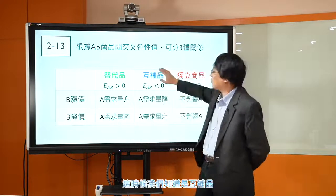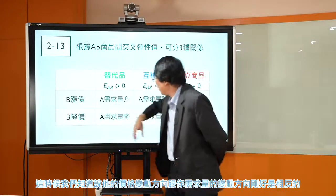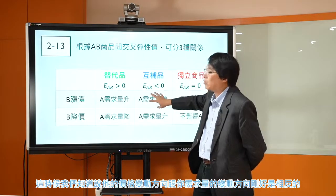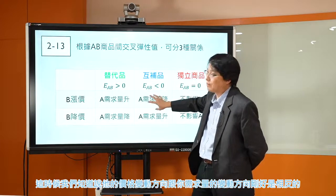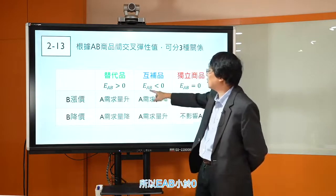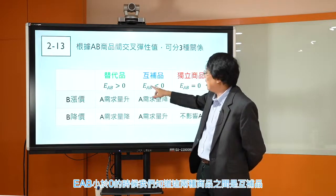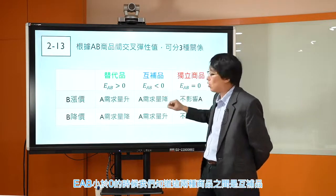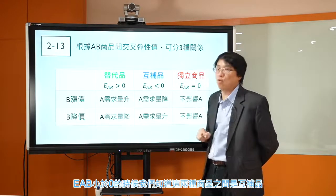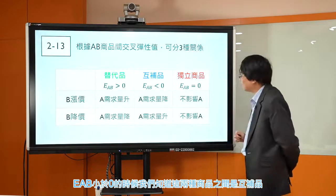B涨价，结果你的需求量降低。他涨价，他自己的产品需求量降低，你也受到伤害。他降价，他得到好处，他的需求量增加，你的需求量也得到好处。你因为他降价这个行为得到额外的好处。你们两个是朋友，是互补品。这时候他的价格变动方向跟你的需求量变动方向刚好是相反的，所以EAB小于零，我们知道这两种商品之间是互补品。